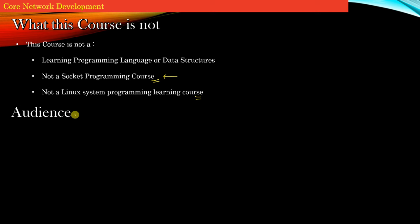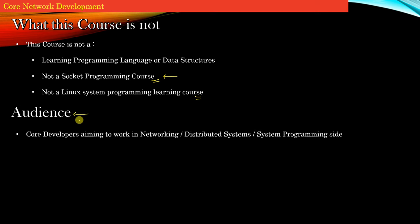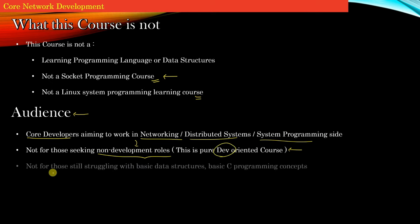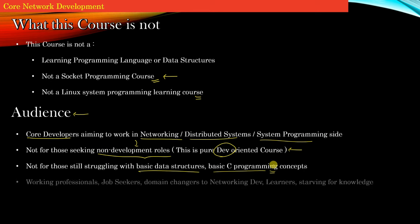The expected audience of this course must possess the following qualities. This course is for those who aim to become core developers in networking, distributed systems or system programming. This course is not for those seeking non-development roles — anybody who is a non-developer or looking for non-developer roles, this course is absolutely meaningless for you. This course is purely meant for developers. It is not for those who are still struggling with basic data structures and basic C programming. If you are still struggling with inserting a node in a linked list, please excuse this course. This course is for working professionals, job seekers, or those looking to change their domain to networking development.